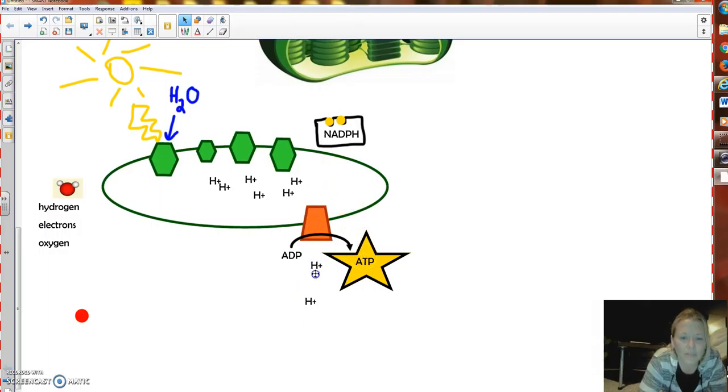So we have these protons pulling through, and every time one pulls through, we make ATP. So now we've made two energy molecules, and those two energy molecules are now ready to go to the Calvin cycle and make glucose. One more quick rundown, okay? Let's go through that one more time.